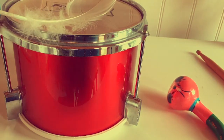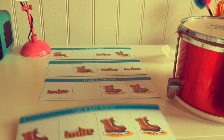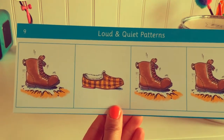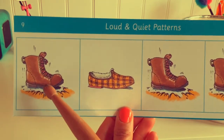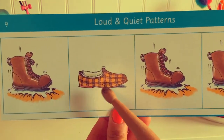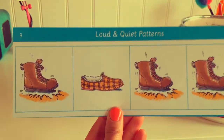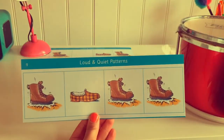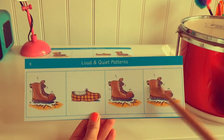Let's have a go at doing some loud and quiet patterns. I have got some cards that have got four boxes in. We have got a boot that represents our loud sound and a slipper that represents our quiet sound. We are going to play this pattern now. We've got loud, quiet, loud, loud.